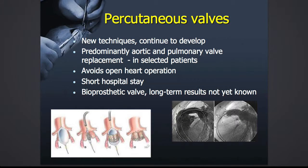Finally, a percutaneous valve — this is a new technique that continues to develop. It essentially involves taking a bioprosthetic valve, rolling it up, and wrapping it around a catheter. You can then introduce the valve through an artery or through a vein, depending on which side of the heart you are working on. You can then place a new aortic valve or a new pulmonary valve, as illustrated here. This technique has been around for about 10 years and is predominantly used for aortic and pulmonary valve replacement in selected patients. It avoids an open heart operation and the hospital stay is short. However, it is a bioprosthetic valve, and because the procedure is relatively new, the long-term results are not yet known.